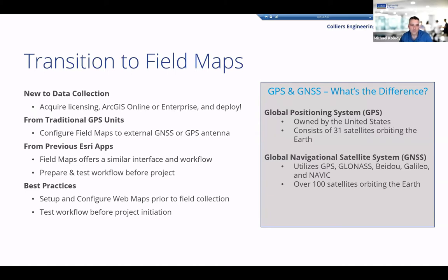GNSS stands for Global Navigation Satellite System — it's pretty much the same concept, but it not only uses GPS, but also Russia's GLONASS network, China's BeiDou, the European Union's Galileo network, or India's NavIC. What this really means at the end of the day is that we go from maybe having 24 to 30 satellites to having over a hundred available at any given time. This makes it much easier and faster to get a satellite fix that's going to give you the accuracy you want to collect your data with.